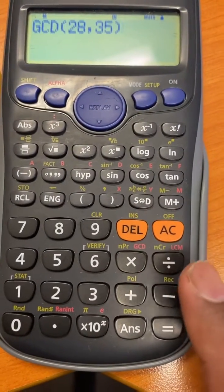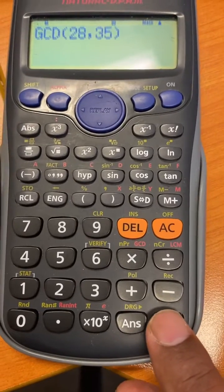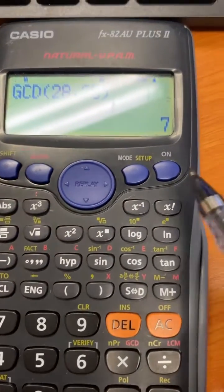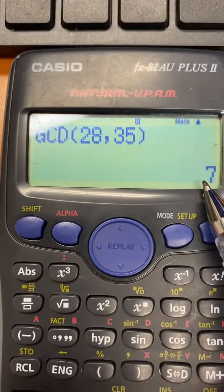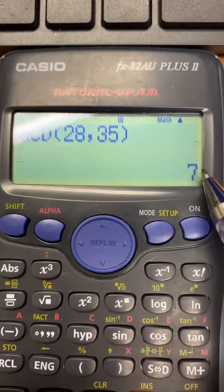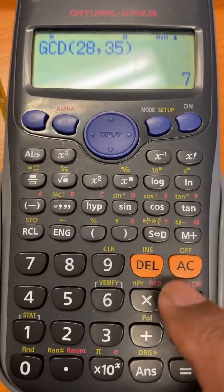You want to find the first number that divides both these numbers evenly resulting in a whole number. So 7 is the number. 28 divided by 7 is 4 whole number and 35 divided by 7 is 5. That's a whole number as well. That is how you find that.